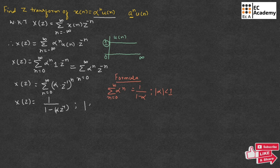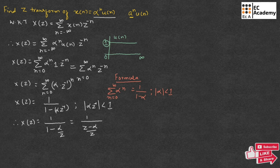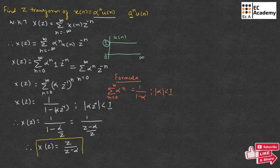Here, the magnitude of alpha z inverse must be less than 1. Therefore, X(z) equals 1 divided by (1 minus alpha over z). Taking the LCM, we get 1 divided by (z minus alpha) over z. Therefore, X(z) equals z divided by (z minus alpha). This is the Z-transform of the given x(n).